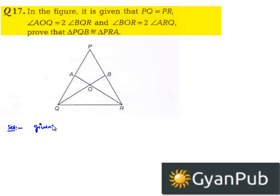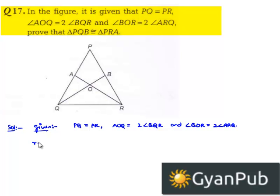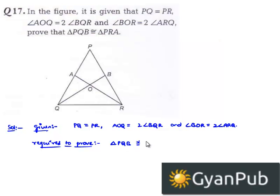Let us note down the given information: PQ is equal to PR, angle AOQ is equal to 2 times angle BQR, and angle BOR is equal to 2 times angle ARQ. We are required to prove that triangle PQB is congruent to triangle PRA.